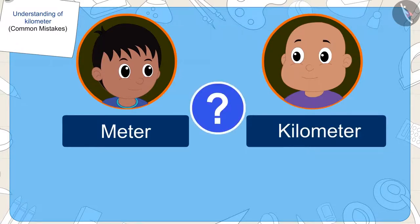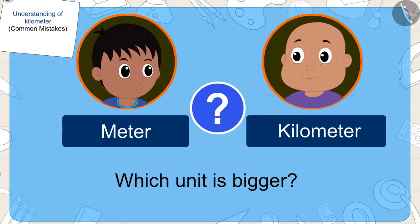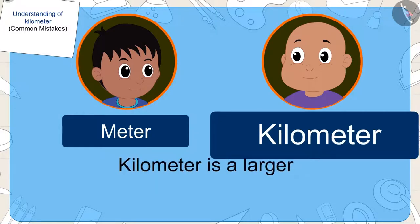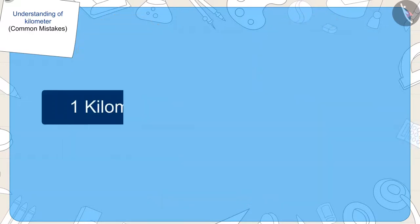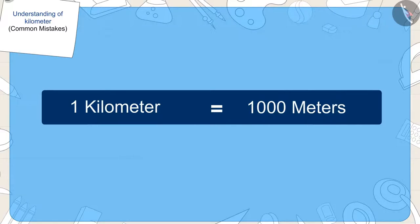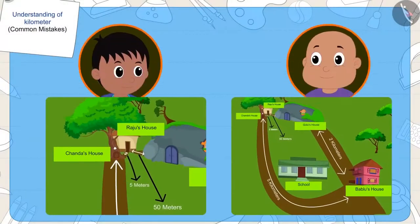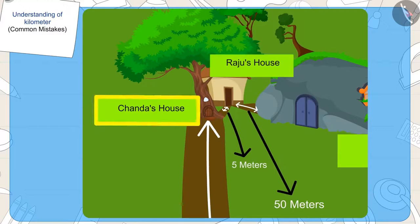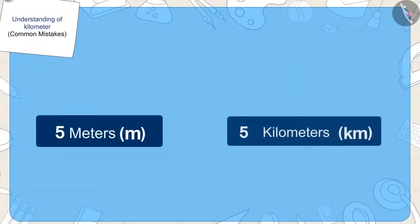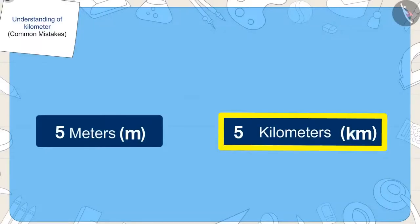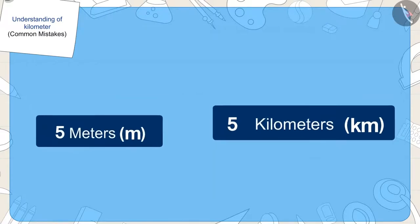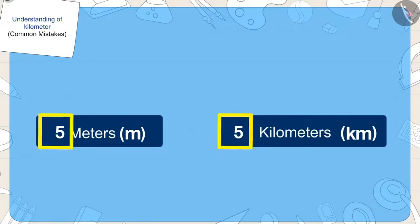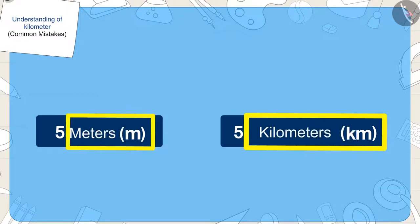The distance unit of Raju's house is in meters and the distance unit of Bablu's house is in kilometers. Kilometer is a larger unit than meter, because one kilometer is equal to one thousand meters. So whose point is correct? Raju's argument is right — his house is closer to Chanda's house. Kids, remember that whenever we have to compare distances or lengths, we should compare not only their numbers, but also their units.